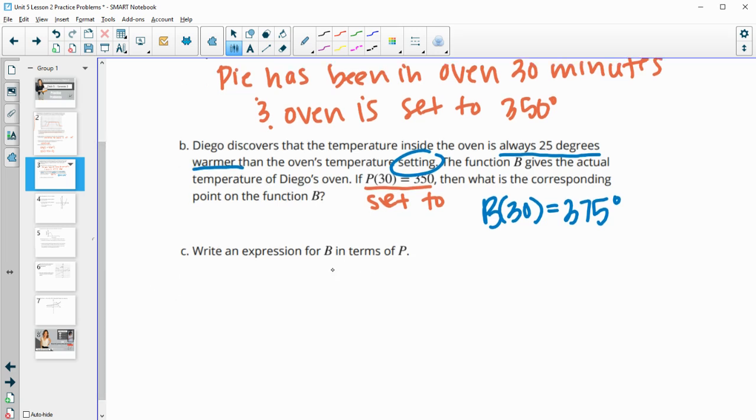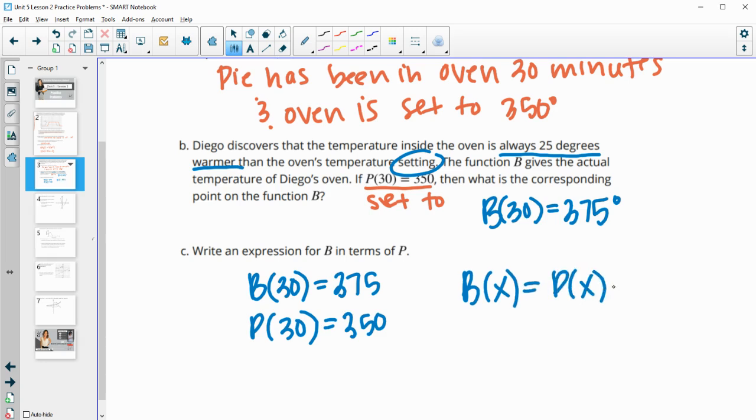So then let's write an expression for B in terms of P. So now we have that B of 30 equals 375, and we know that P of 30 is equal to 350. So they have the same X values, so B of X equals P of X, but plus 25. So at 30 minutes, B is just 25 degrees warmer than the original setting.